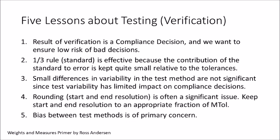Let me recap with five lessons we learn about testing verification. First, the result of a verification is a compliance decision, not a measurement, and we want to ensure low risks of bad decisions. Second, the one-third rule of the standard is effective because the contribution of the standard to variability is kept quite small relative to the tolerances. Third, small differences in test method variability are not significant, since test variability has very little impact on compliance decisions. Fourth, start and ending rounding is often very significant — keep them to an appropriate fraction of the maintenance tolerance. Fifth, the bias between test methods is our primary concern.